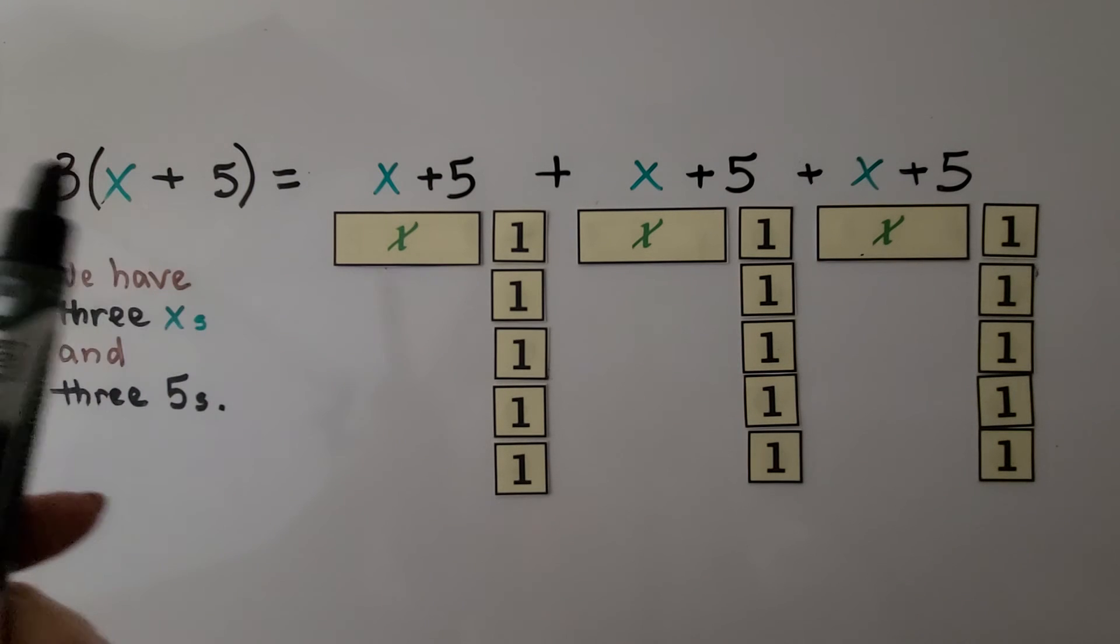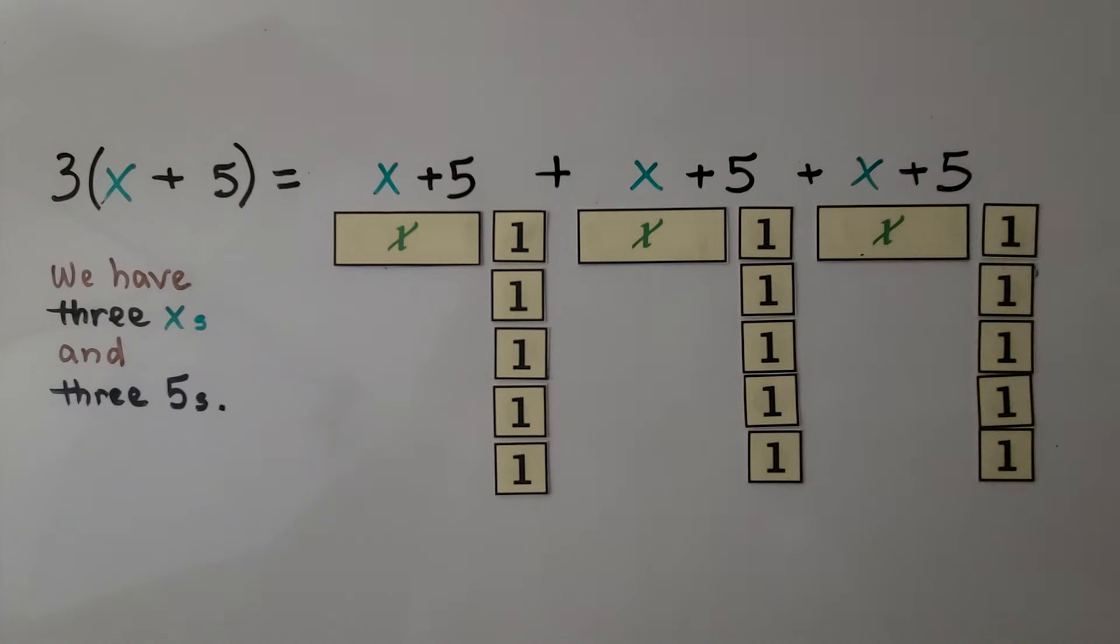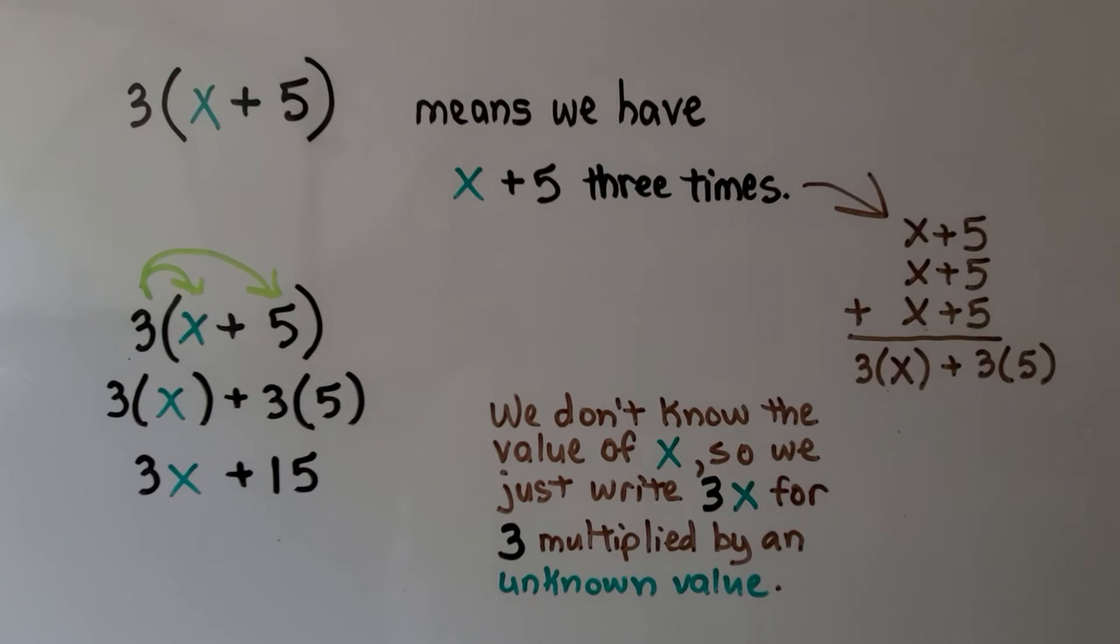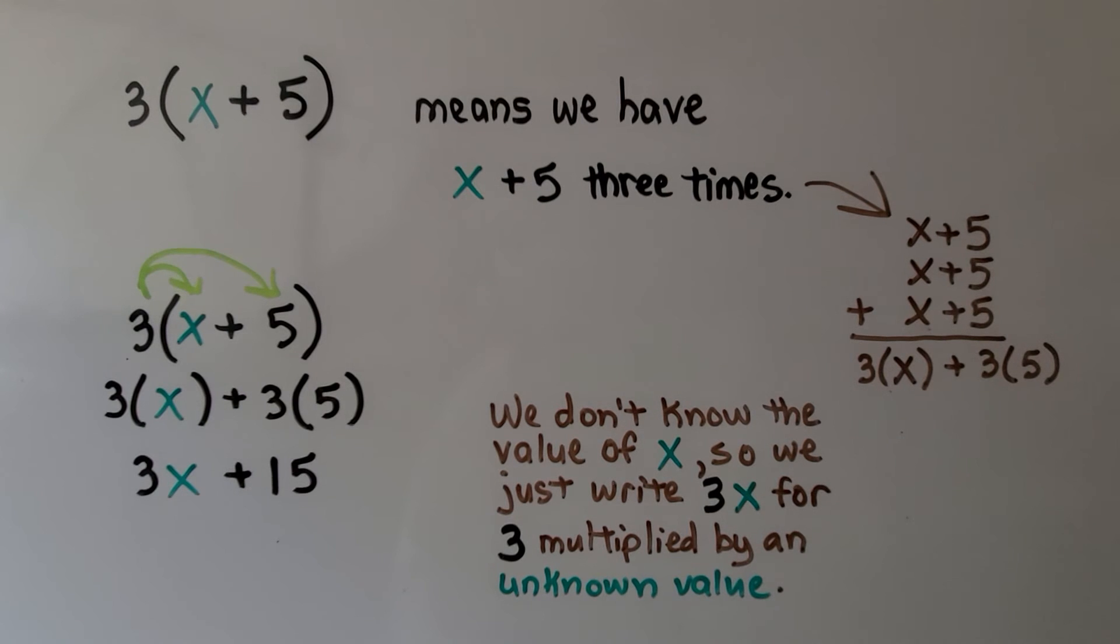We have x plus five three times. We have three x's and three fives. 3(x + 5) means we have x plus five three times.